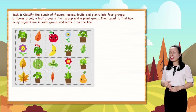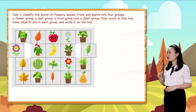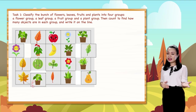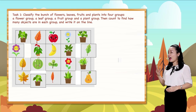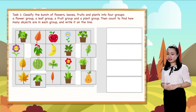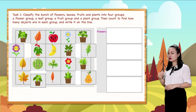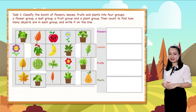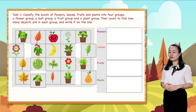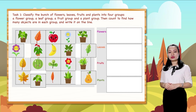Now, have this worksheet. Cut out the flowers, leaves, fruits, and plants, so you have a bunch of them. Now have this worksheet so that we can classify the bunch into four groups: a flower group, a leaf group, a fruit group, and a plant group. You could pause this video to do it on your own. When you finish, replay the video to check the answer with me.